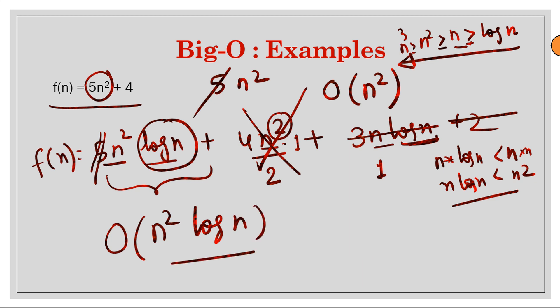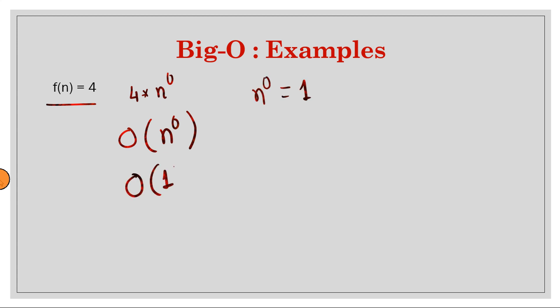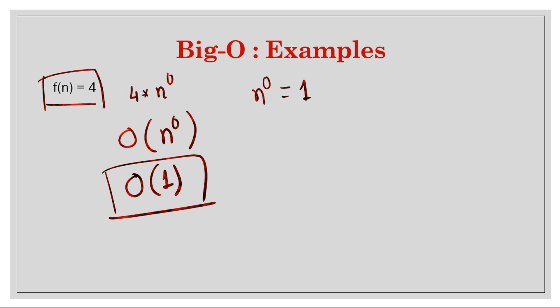If the running time is a constant, such as 4, that is 4 multiplied by n raised to the power 0 with no other terms, so this is O(n⁰) = O(1). This is a special case: when the running time is constant, we write it as O(1). The same notation applies for space complexity as well.